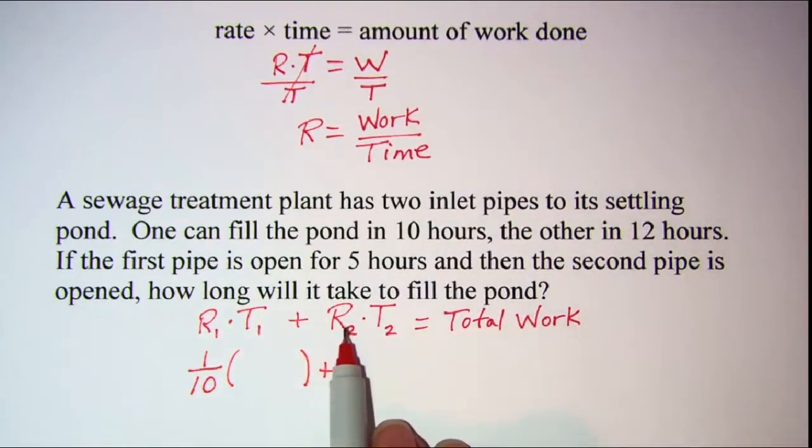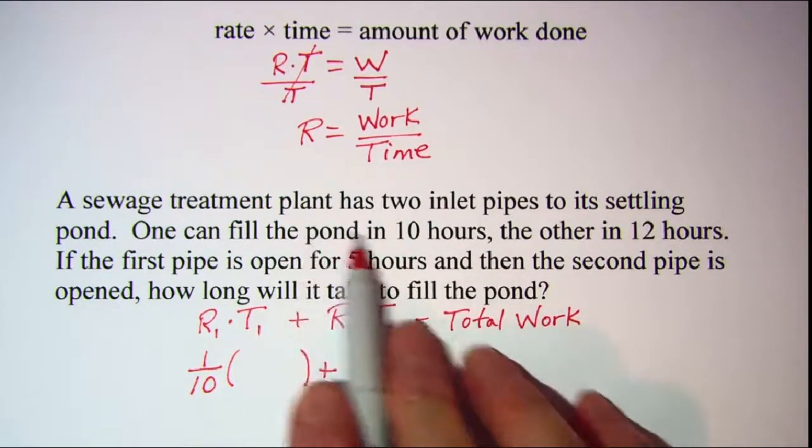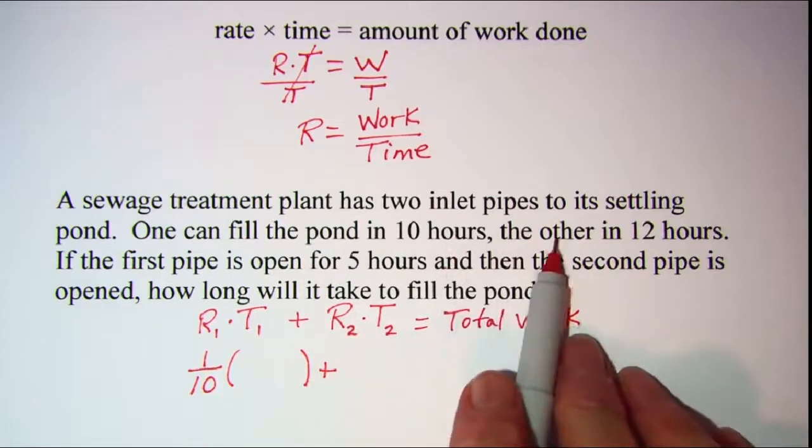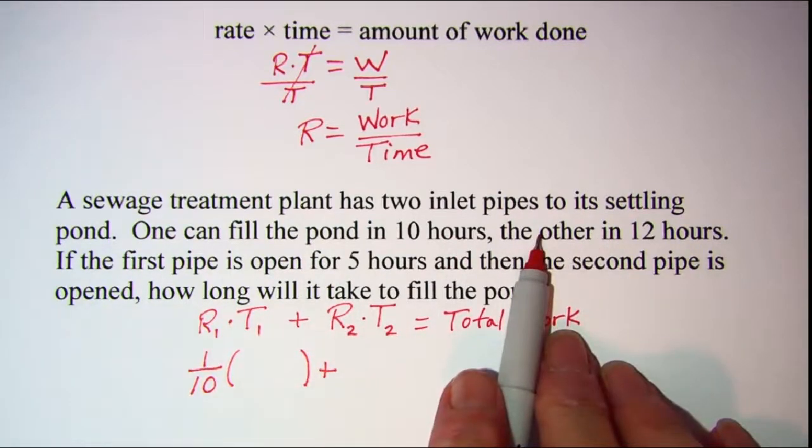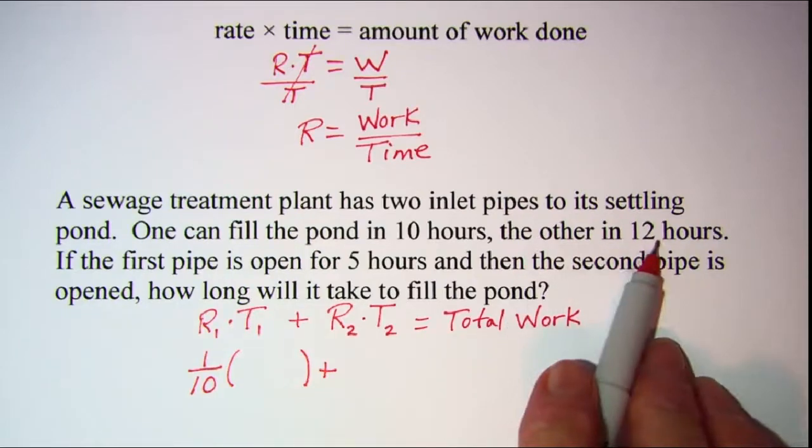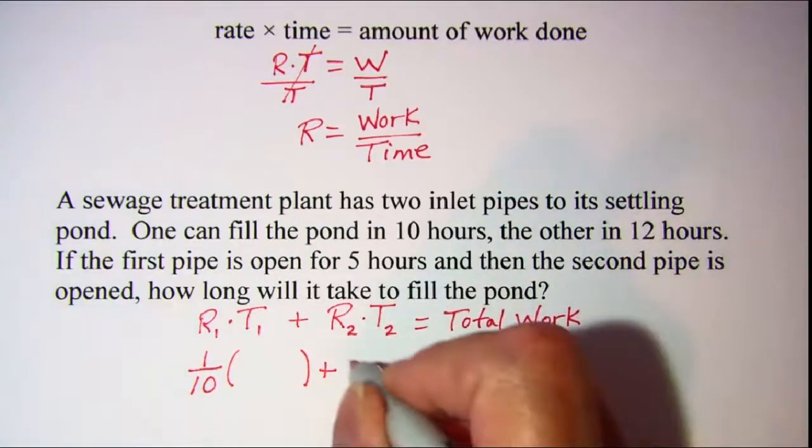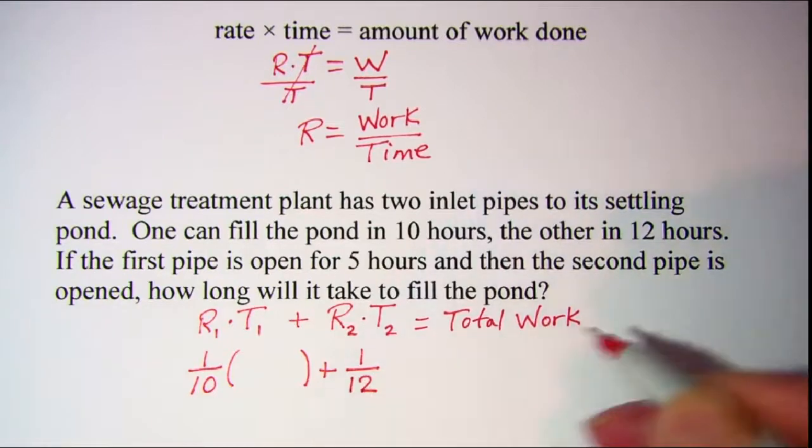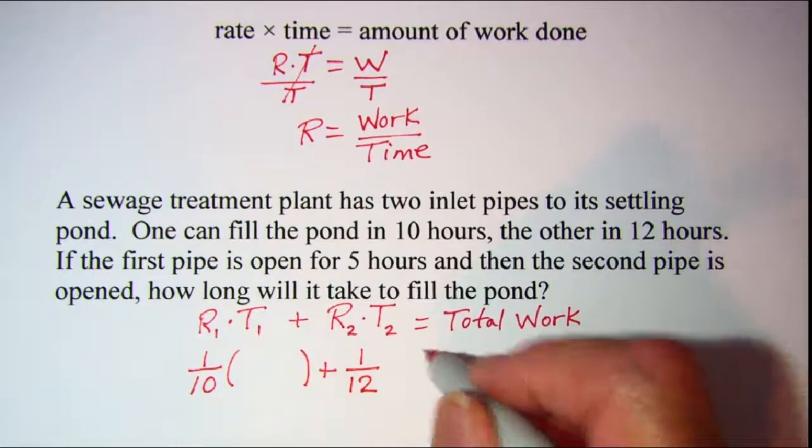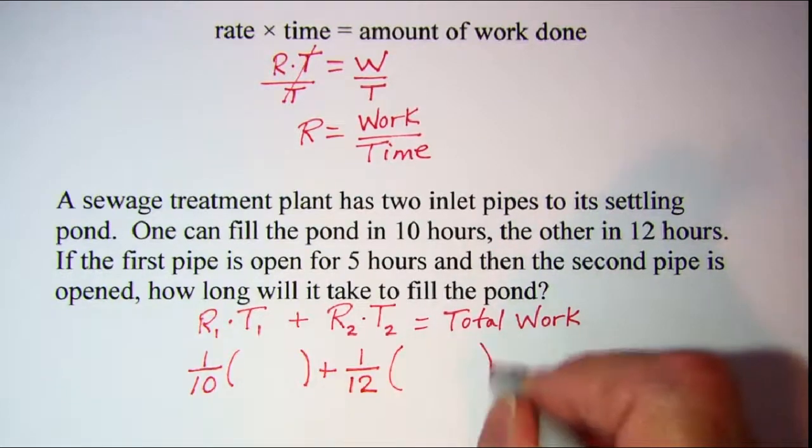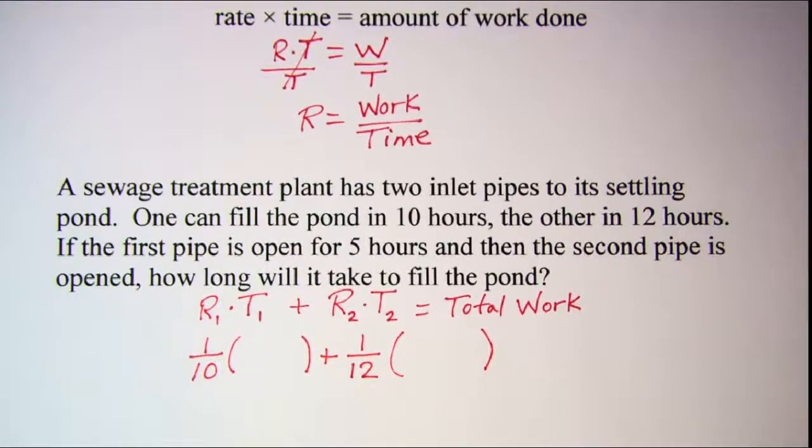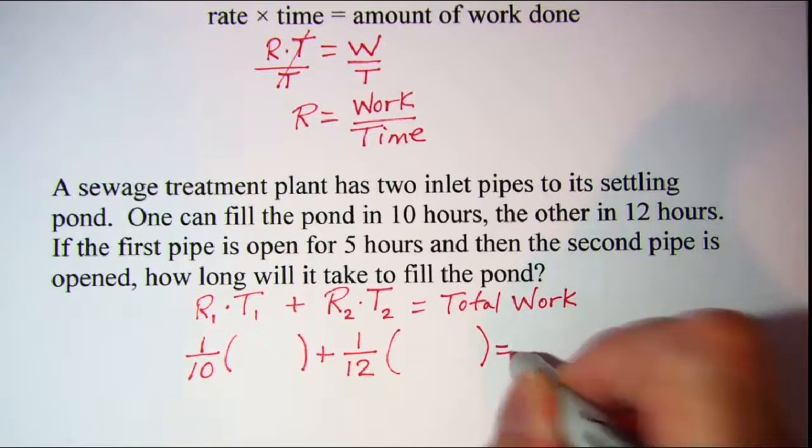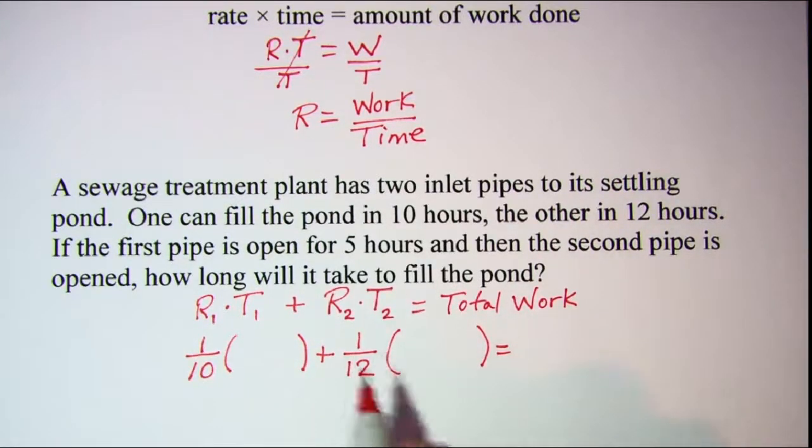Now let's find the rate for the second pipe. One can fill the pond in 10 hours, the other in 12 hours. So the other one fills one pond in 12 hours. So the rate is 1 pond in 12 hours, or 1 twelfth of the pond per hour. And then let me put a space here for that time.